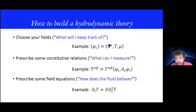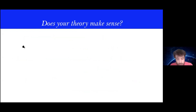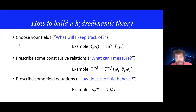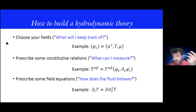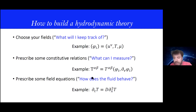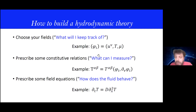In the case of the perfect fluid, one typically chooses a fluid velocity, the temperature, and the chemical potential, but one can take something else. Then the second thing that one needs to choose is some constitutive relations. Basically, if you have some quantity that you are interested in and this quantity is not just your fields, since you assume that your fields track all the information, you need to be able to write these other quantities in terms of the fields. For example, if you have a stress-energy density, you need to write it in terms of the fields.